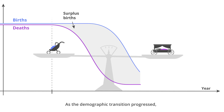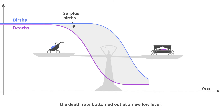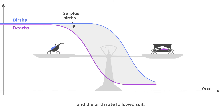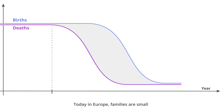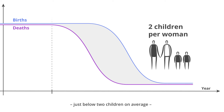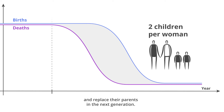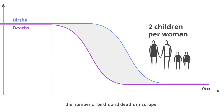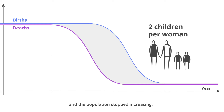As the demographic transition progressed, the death rate bottomed out at a new low level, and the birth rate followed suit. Today in Europe, families are small, just below two children on average, and practically all children reach adulthood and replace their parents in the next generation. By the end of the 20th century, the numbers of births and deaths in Europe had practically evened out, and the population stopped increasing.